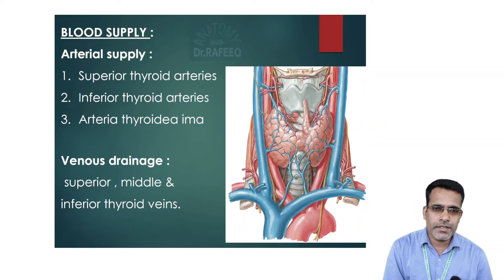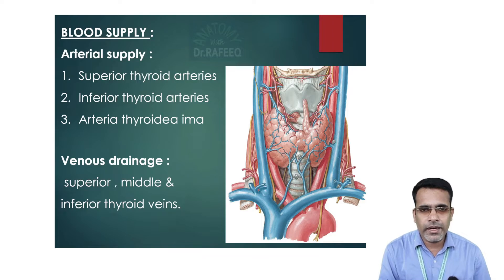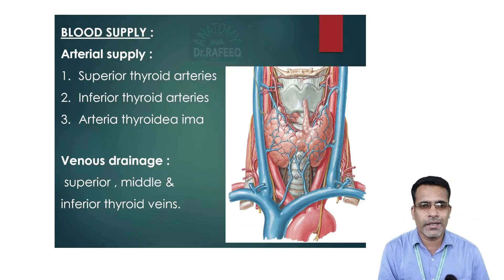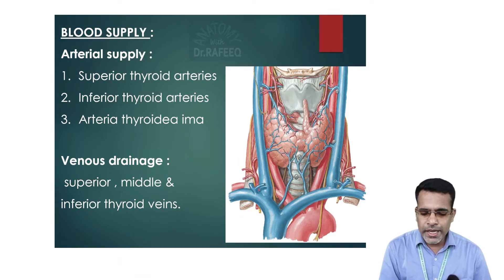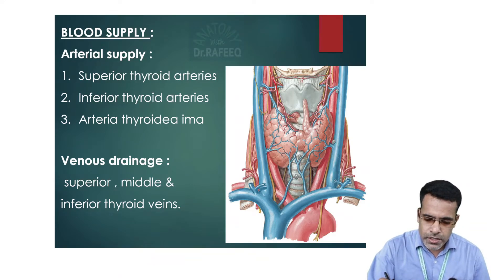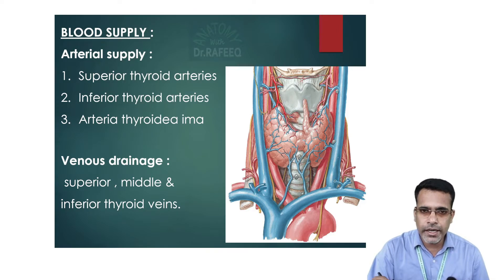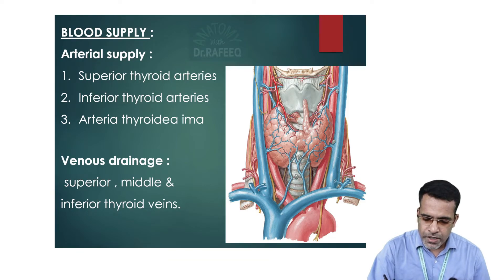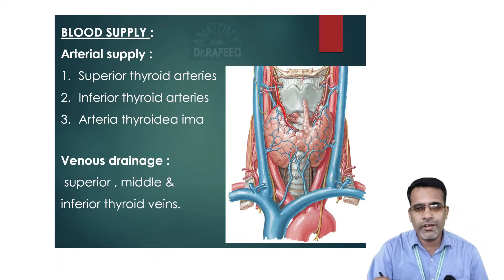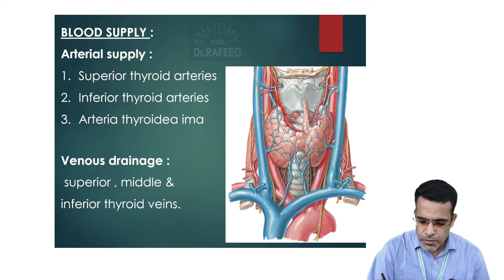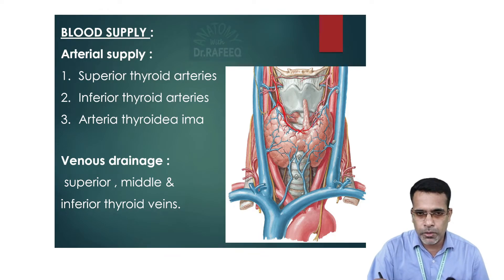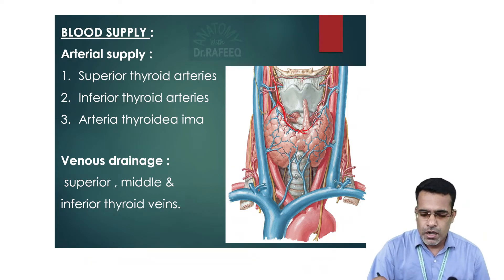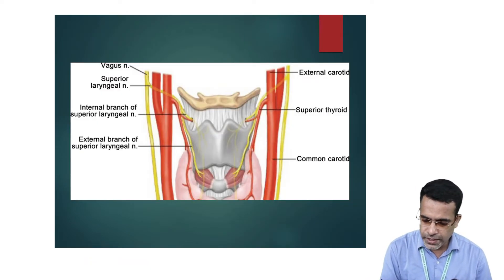Now let us discuss the blood supply of the thyroid gland. Various arteries supply oxygenated blood, and three veins drain deoxygenated blood. The superior thyroid artery, arising from the external carotid artery on either side, reaches the apex and divides into anterior and posterior branches. The anterior branches of both sides anastomose along the upper border of the isthmus. The posterior branch anastomoses with the ascending branch of the inferior thyroid artery.